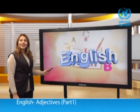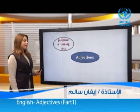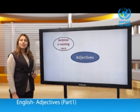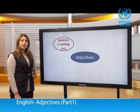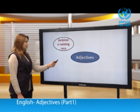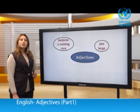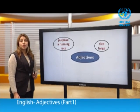Welcome back. We use adjectives to describe many different meanings. Number one: purpose — for example, a running race. Number two: size — for example, large, big, or small. Number three: age — for example, young or old. Next: color — for example, blue, red.